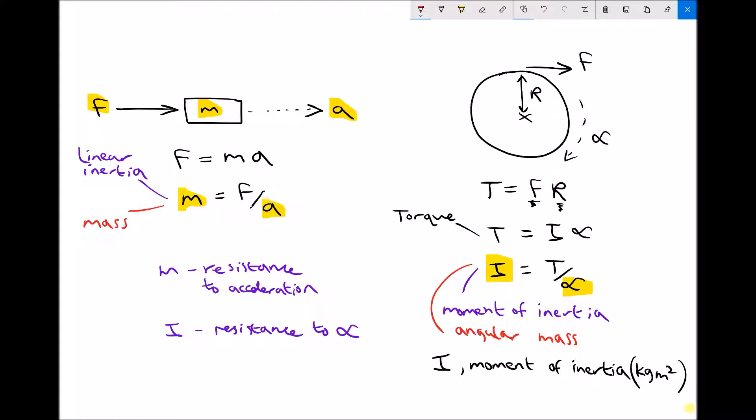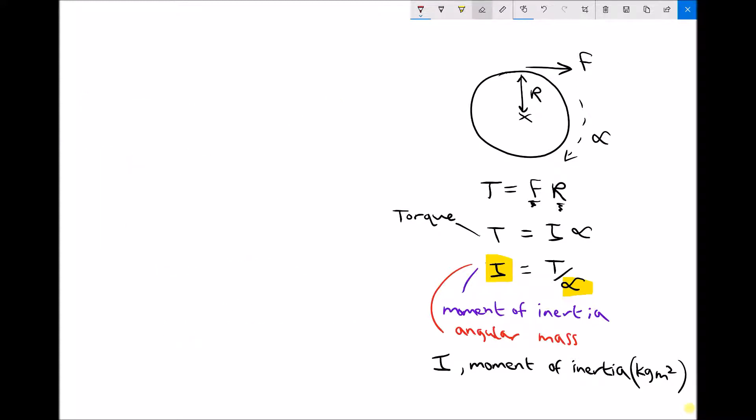So moment of inertia, linear inertia, or mass and angular mass, they're equivalent. They serve the same purpose. They both resist acceleration. So sticking with this variable I, moment of inertia, let's look at what actually affects our moment of inertia.